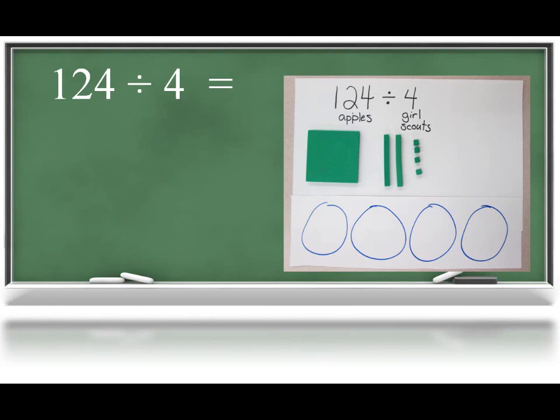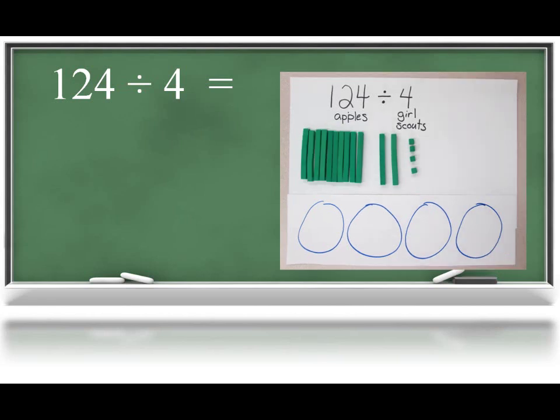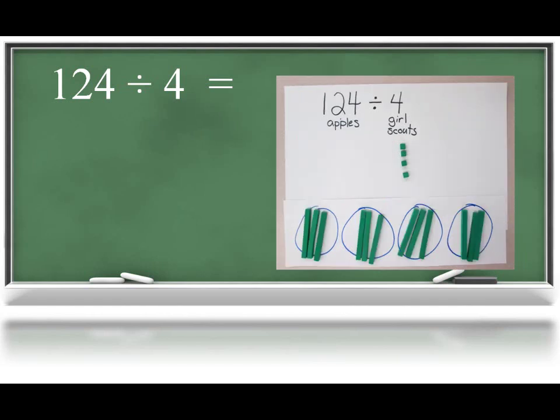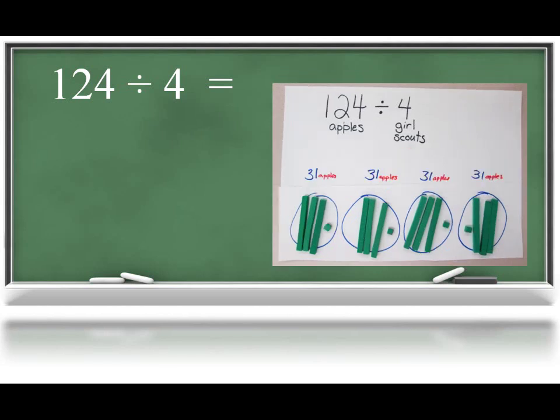First, looking at the hundreds, you can't split 100 into 4 groups, so they would have to regroup that 100 as 10 tens rods or 10 tens. They now have a total of 12 tens rods or 12 tens, which can easily be split into 4 groups with 3 tens rods or 3 tens in each group. They now can split the unit cubes 4, 1 for each group, and they would get 31 apples in each group.